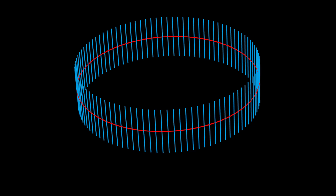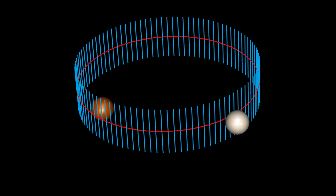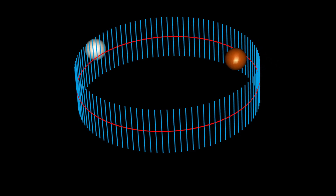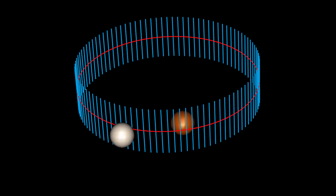We conduct a rolling marbles test to determine the number of sides of the cylinder. Position white and orange marbles opposite each other and start them rolling in opposite directions. The white and orange marbles return to their starting point and can never collide. Therefore, the cylinder has two sides.